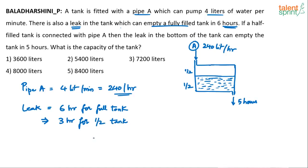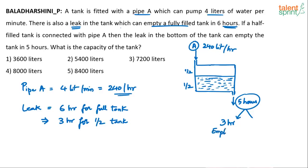Out of the 5 hours that the leakage worked, 3 hours went in emptying the already-filled half tank. It doesn't happen that first the half tank empties then pipe A's water empties — the process is continuous — but we can say out of 5 hours, 3 hours were spent in only emptying the half tank.